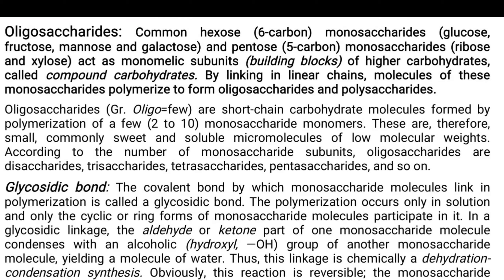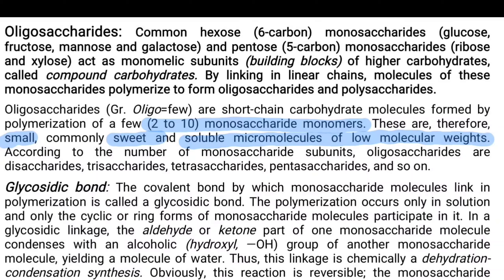Ultimately, the monosaccharides polymerize — first they'll be forming the oligosaccharide, and then they'll be going for the formation of the polysaccharides. So, dealing with the first thing first: oligosaccharides are the short chain carbohydrate molecules formed by 2 to 10 monosaccharide monomers, and they are comparatively smaller than the polysaccharides. The common features are that they are sweet and soluble, having low molecular weight compared to polysaccharides but comparatively high molecular weight compared to monosaccharides.